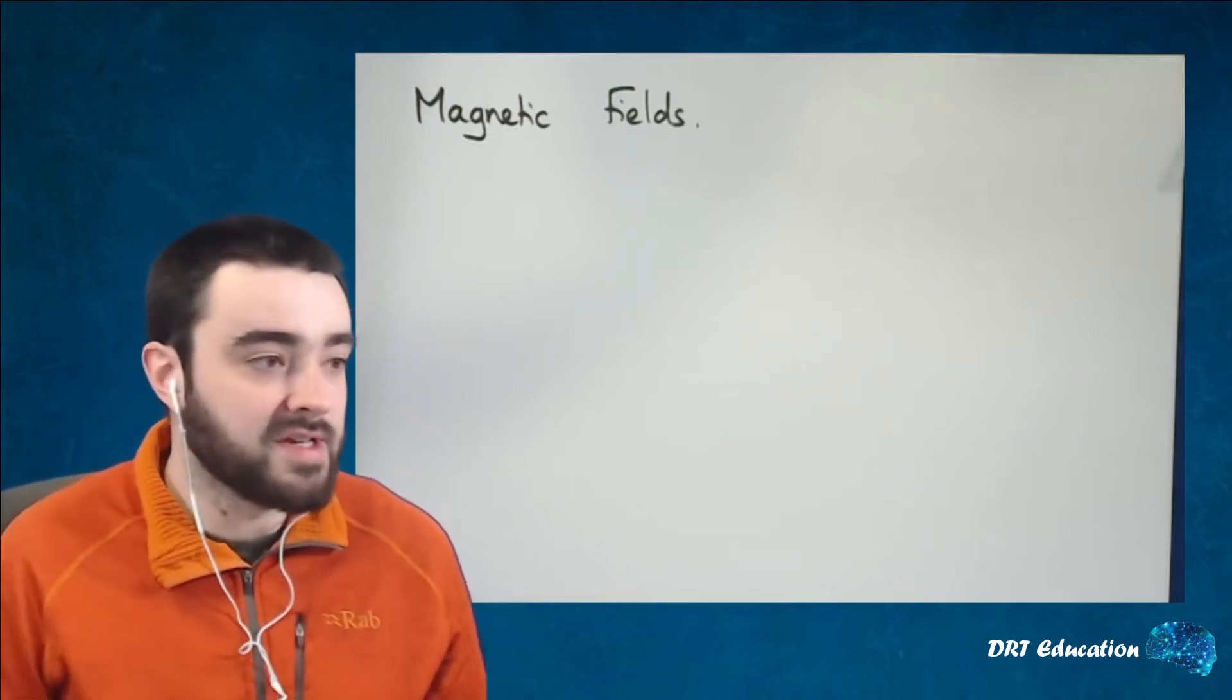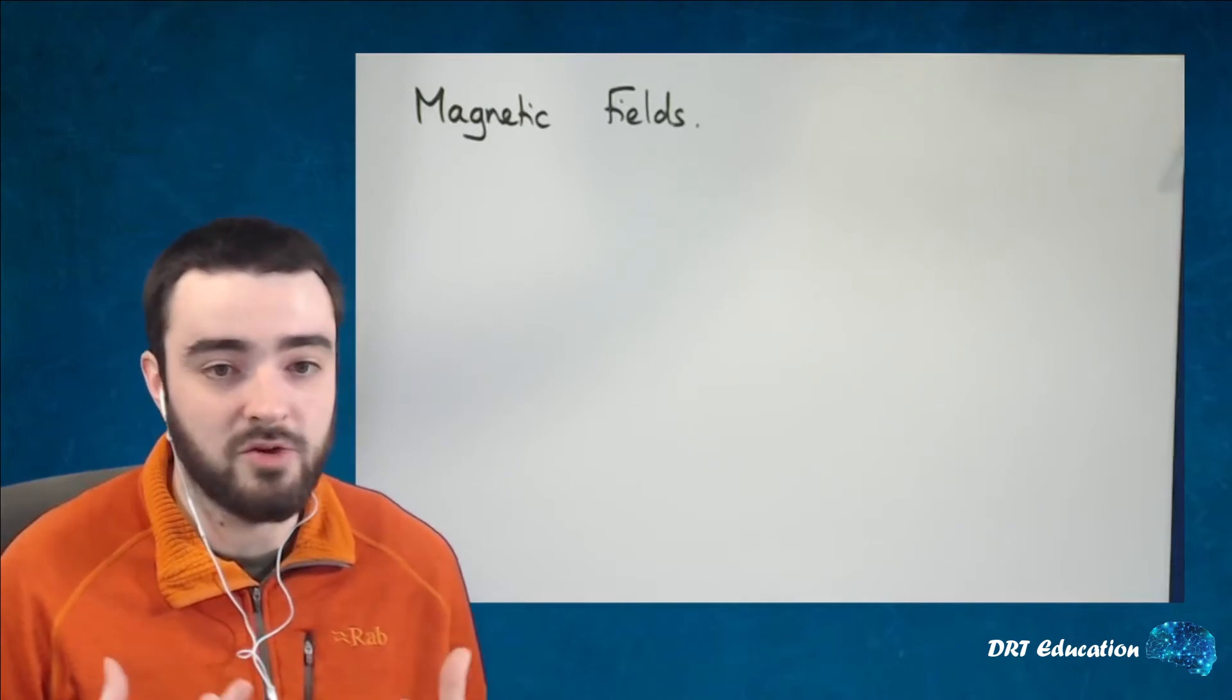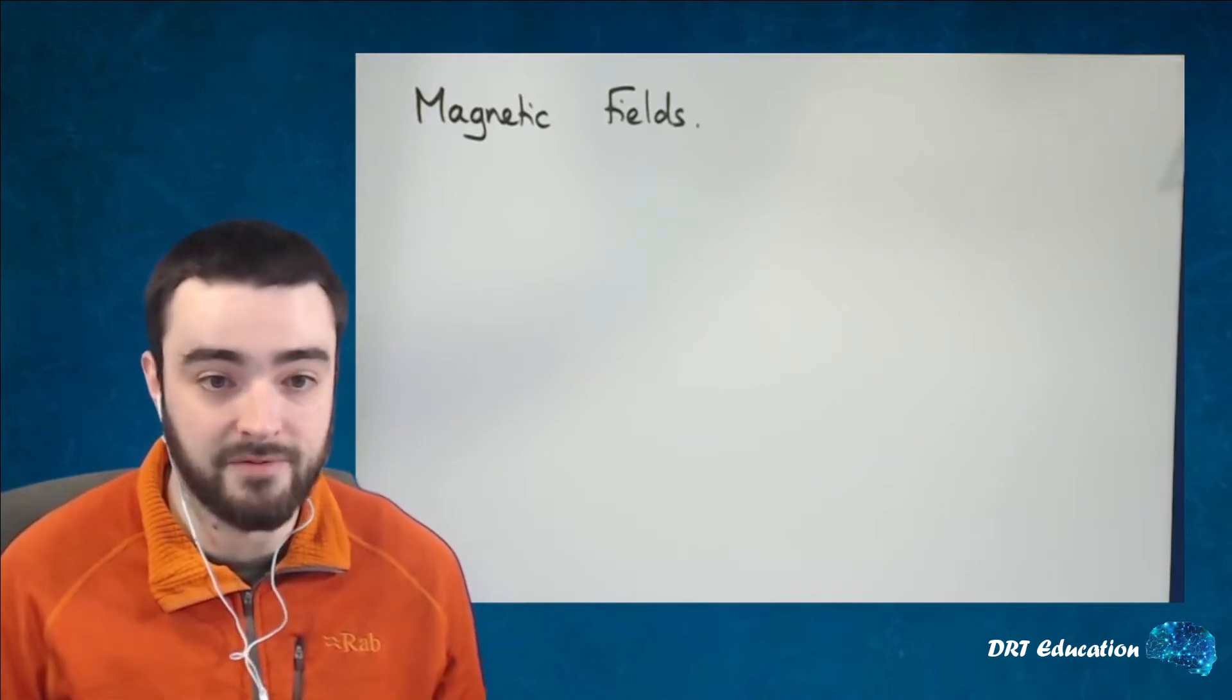So this is quite a nice simple topic. There's not that much you need to know, basically you need to know what a magnetic field is and the shape of magnetic fields will take around some different objects.